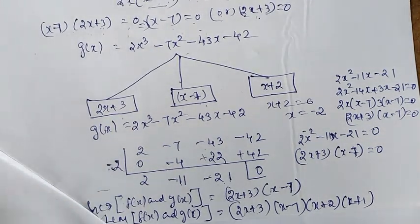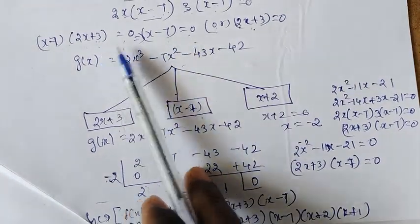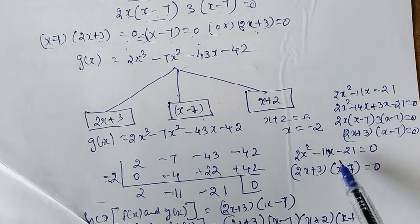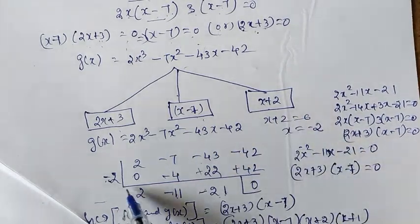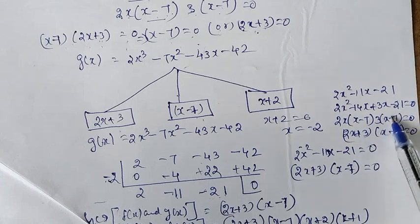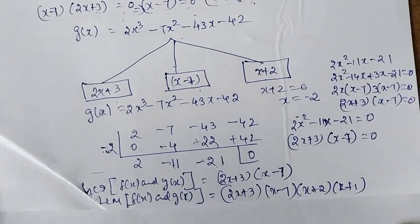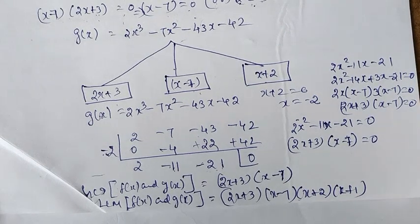Now I'll explain — I will factorize it. What do we need? We factorize it to find the GCD and LCM. That's all. Thank you. For more videos, please subscribe to our channel.